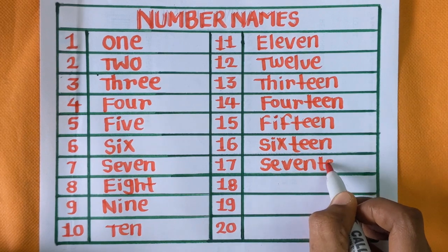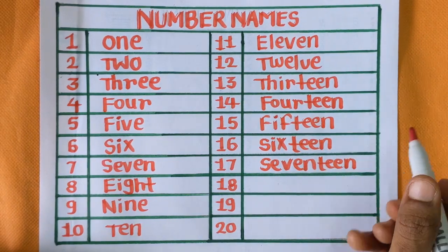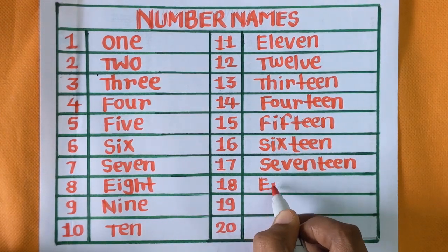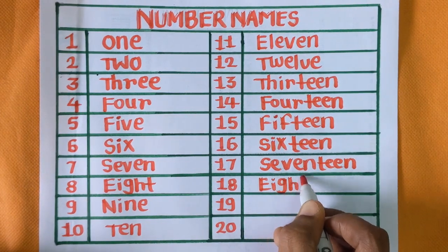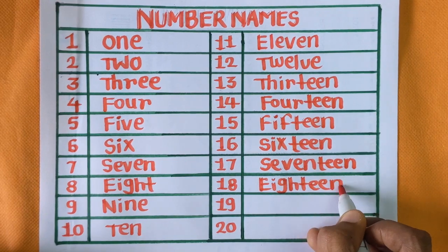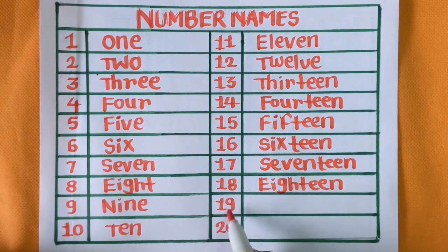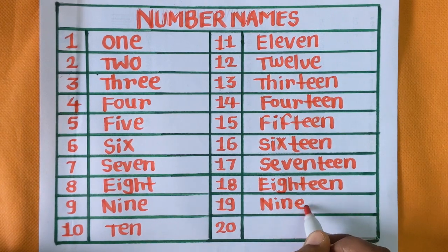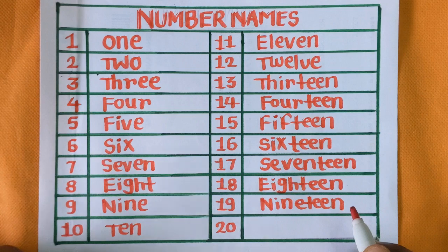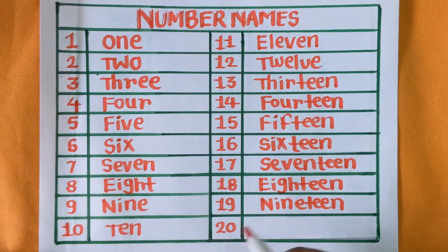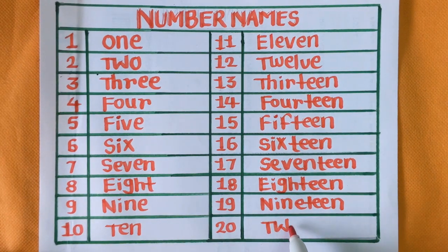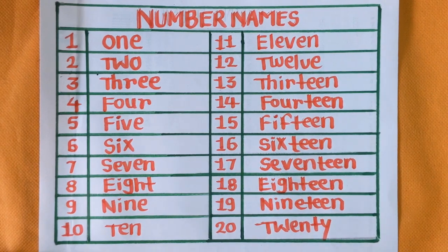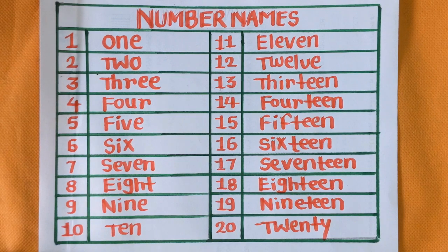Seventeen, S-E-V-E-N-T-E-E-N, seventeen. Next is eighteen, E-I-G-H-T-E-E-N, eighteen. Nineteen, N-I-N-E-T-E-E-N, nineteen. And twenty, T-W-E-N-T-Y, twenty. Now we will revise and you have to revise with me, okay?